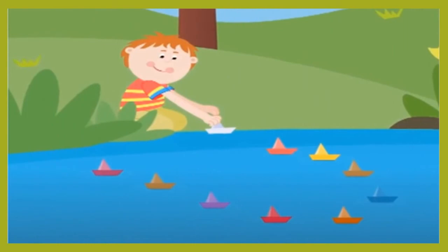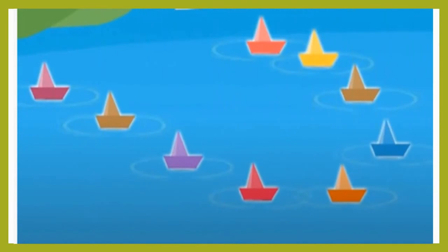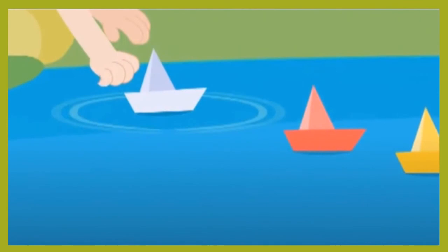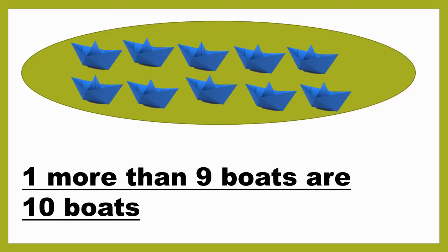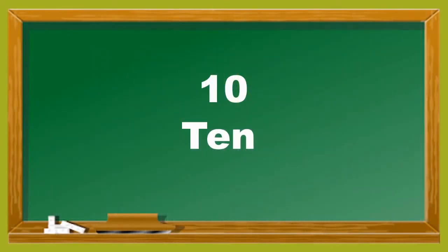Look, Abby has made nine boats. Now he has made one more boat. How many boats did he make? One more than nine is 10. So Abby made 10 boats in all. We can write this as T, E, N — 10.